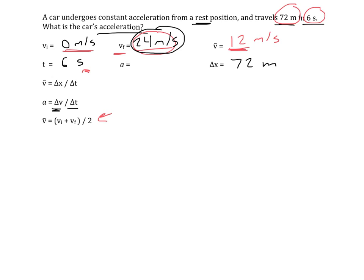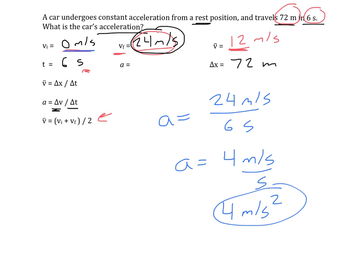So it goes from 0 to 24 meters per second in 6 seconds. So the acceleration is defined as the change in velocity. So it changes by 24 meters per second over a course of 6 seconds. So the acceleration is 24 divided by 6, 4 meters per second per second, or often written as 4 meters per second squared. So that would be the car's acceleration over this time.